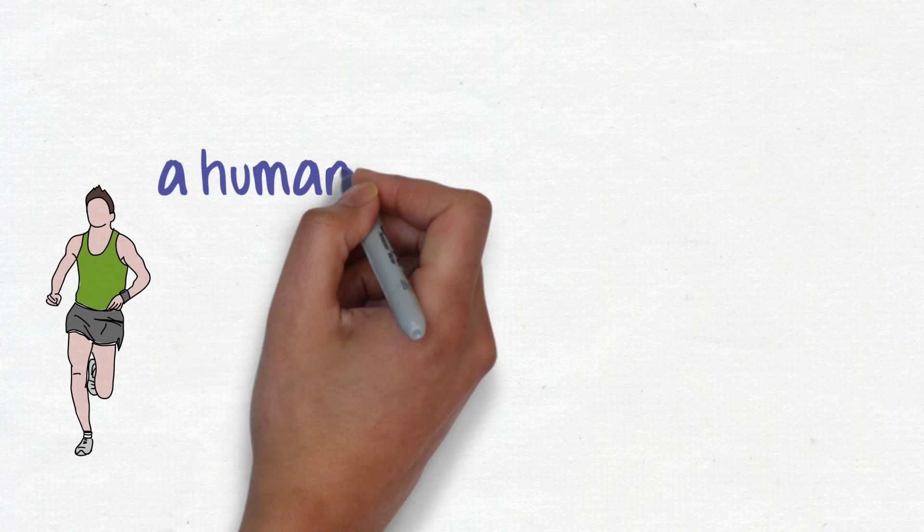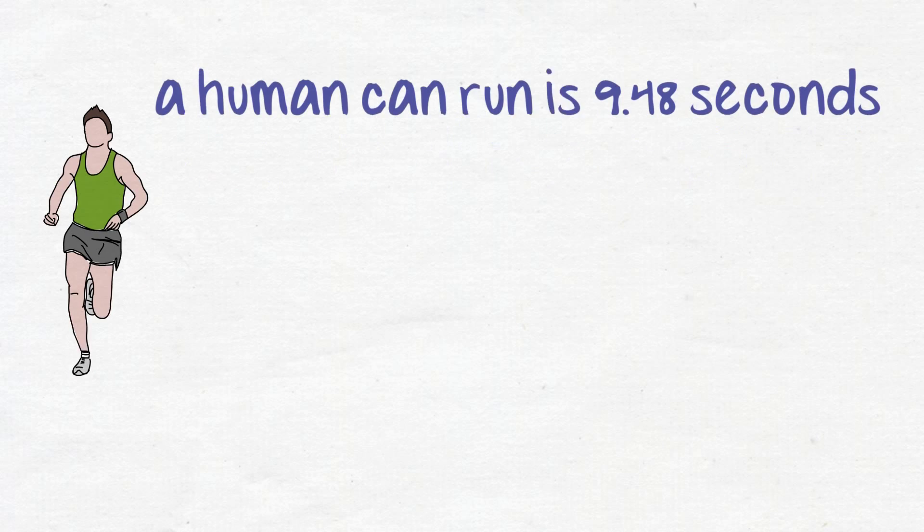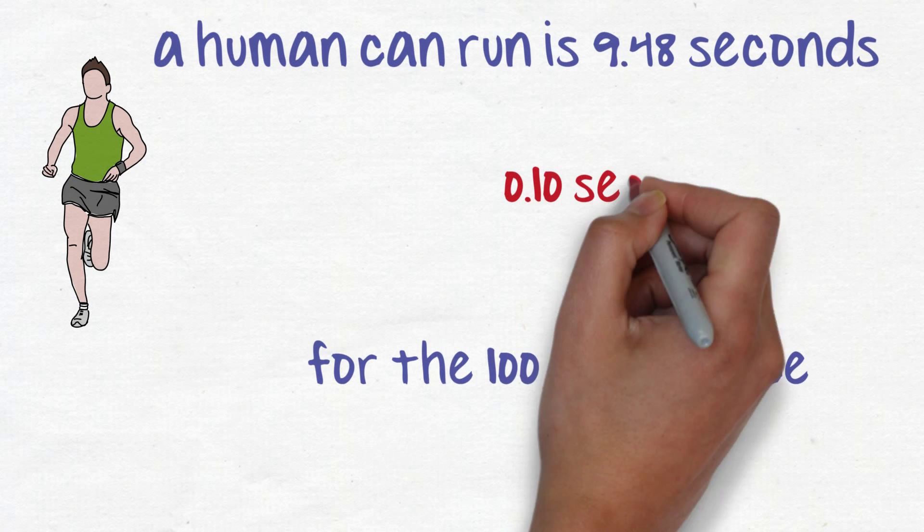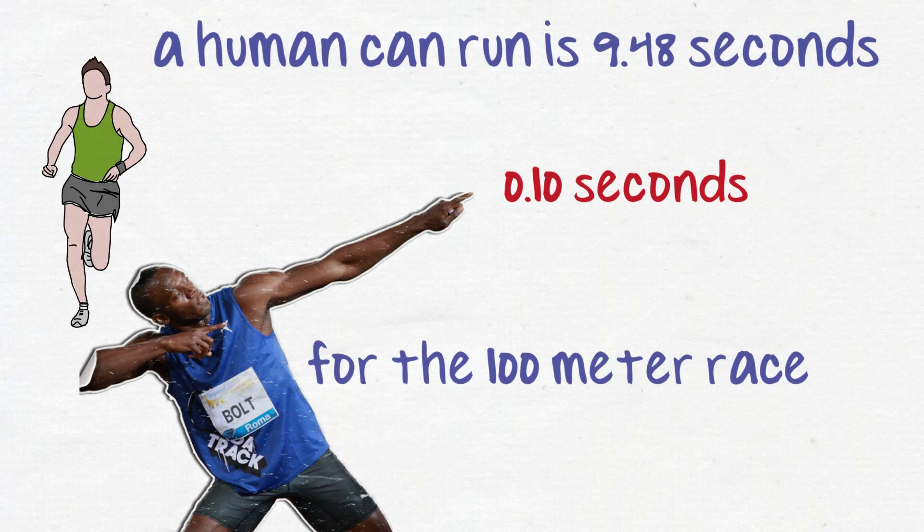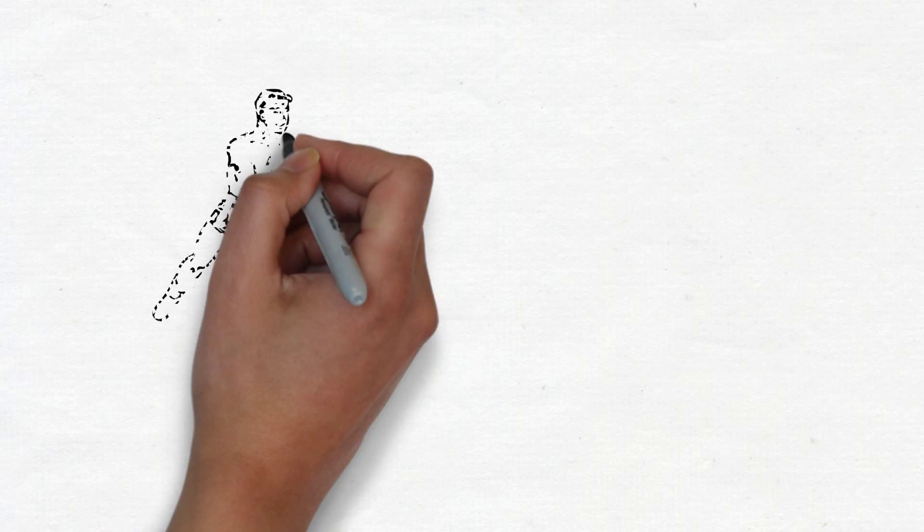The limit to how fast a human can run is 9.48 seconds for the 100-meter race, 0.10 seconds faster than Usain Bolt's current world record, according to Stanford biologist Mark Denny.